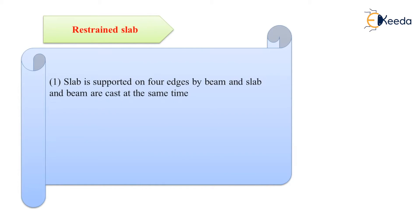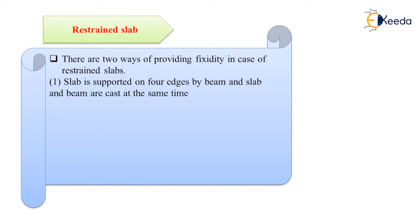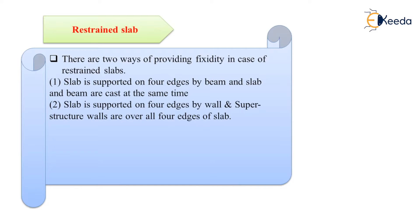The Indian Standard specifies two ways of providing fixability in the case of restrained slab. The first is that the slab is supported on four edges by beams, and the slab and beam are cast monolithically — that is, at the same time. The second is that the slab is supported on the edges by four walls, with superstructure walls also above the slab.